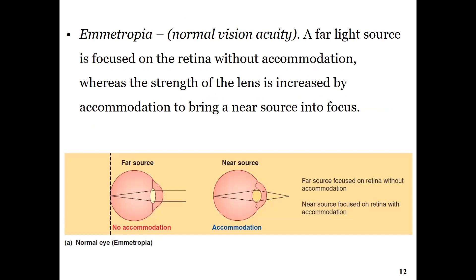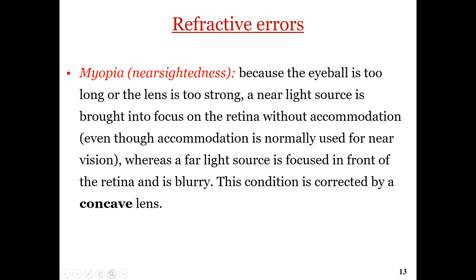Normal visual acuity means the far light source or far object is focused on the retina without the need of accommodation, while near light sources or near objects are focused on the retina after accommodation. We need accommodation for near light sources. This is called emmetropia or normal visual acuity.